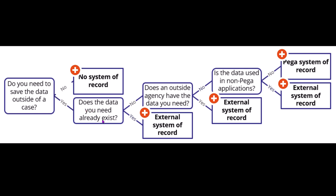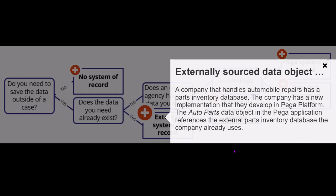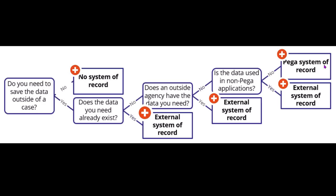If the data you need already exists in some external system of record, you need not save it again. For example, consider a company that handles automobile repairs and has a parts inventory database. The auto parts data objects in the Pega application reference the external parts inventory database — since it already exists there, you need not store it separately.